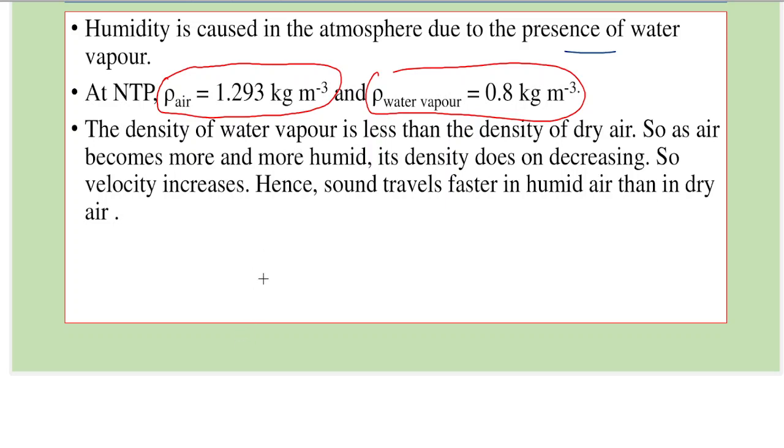Here it is obvious that velocity goes as 1 by under root of rho, assuming gamma and P to be constant.